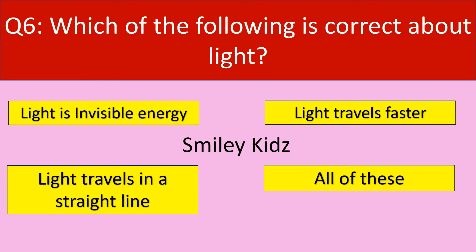Question number 6. Which of the following is correct about the light? Your options are: Light is Invisible Energy, Light travels faster, Light travels in a straight line, All of these.